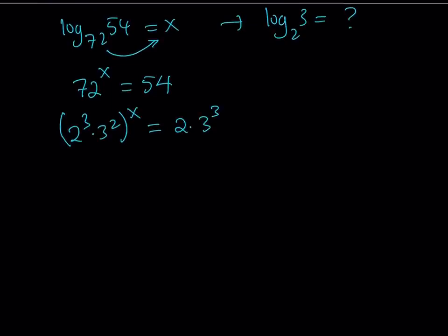Let's go ahead and multiply all the exponents by x. 2 to the power 3x multiply by 3 to the power 2x equals 2 to the first. Obviously that's what it is. Times 3 to the third.